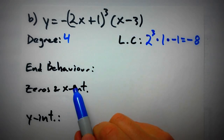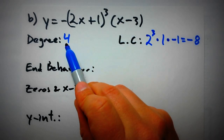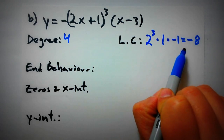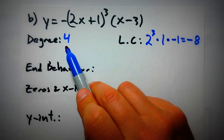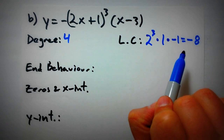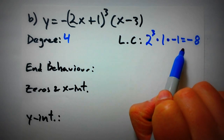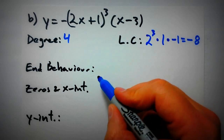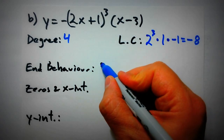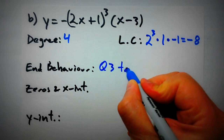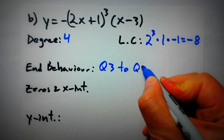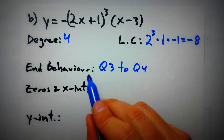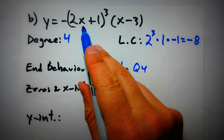Now let's look at the end behavior. We know it's an even-degree function with a negative leading coefficient, so it goes from quadrant 3 to quadrant 4 — meaning both ends of the graph point downward.